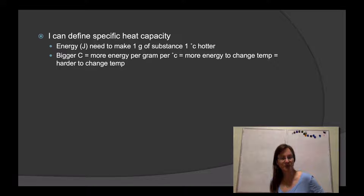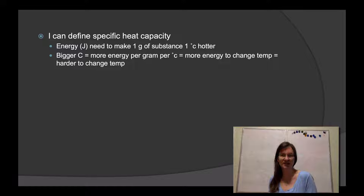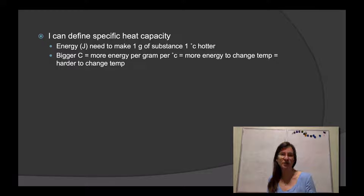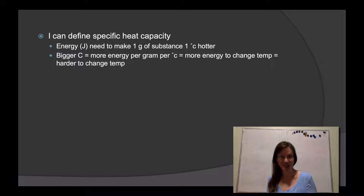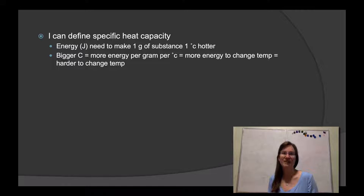We also work with temperature change using Q = mcΔT. First, I can define specific heat capacity: that is the amount of energy required to take one gram of a substance and make it one degree hotter. A large specific heat capacity means you need a lot of energy per gram to change temperature by one degree — I think of it as resistance to temperature change. That's why water takes so long to boil. A material with lower specific heat capacity gets there much faster with less energy.